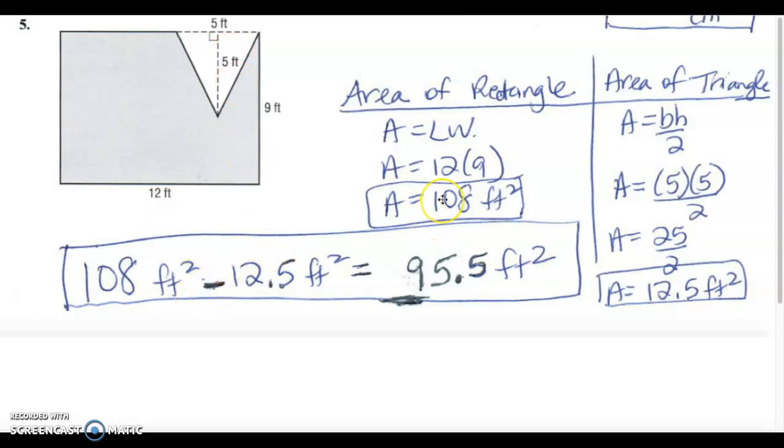I took the area of the rectangle the whole thing and I subtracted the area of the triangle. When I subtract those two areas I get ninety five point five feet squared.